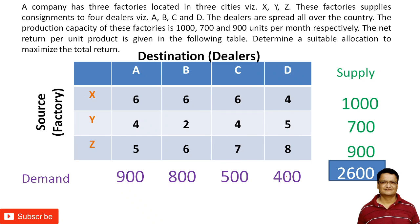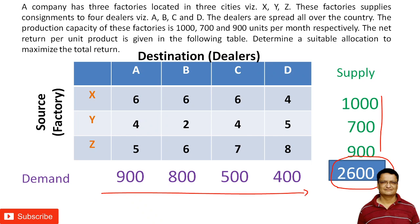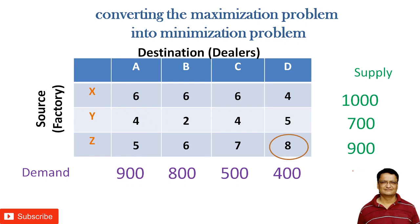We need to check whether the problem is balanced or unbalanced. Here the sum of total supply and the sum of total demand both equal 2600, so this is a balanced transportation problem. If they did not match, we would need to take a different approach. Now we need to convert the maximization problem into a minimization problem.